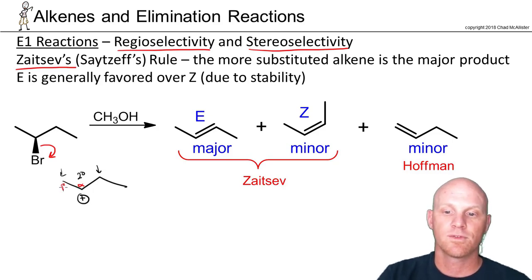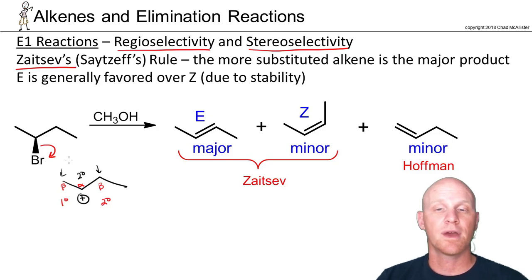That's our alpha carbon. We've got two beta carbons. One beta carbon is secondary, one is primary. And Zaitsev would say form the more substituted alkene by using the more substituted beta carbon, or at least deprotonating the more substituted beta carbon.